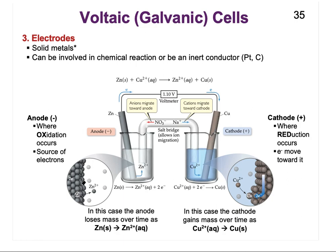On the left-hand side where solid zinc is being converted into zinc 2+ ions, the zinc from the electrode is actually dissolving into solution. So over time, the anode is going to be losing mass because zinc solid is being converted into zinc ions swimming in solution. On the right-hand side, the copper electrode is not losing mass — instead it's gaining mass, because copper ions from the solution are depositing as copper solid onto the electrode.